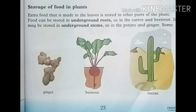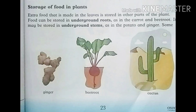Listen to me class. Storage of food in plants — extra food is stored in other parts of the plant. Food can be stored in underground roots, such as in the carrot and beetroot.